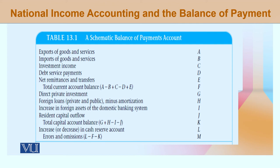We will start one by one with different components. We will discuss the exports of goods and services. When we have GNP's equation, we discuss open economies — not only the domestic consumption, but also what the rest of the world consumes. Exports means that domestically, like Pakistan, how many goods and services are going out to the rest of the world. That would be your exports in the form of goods and services.